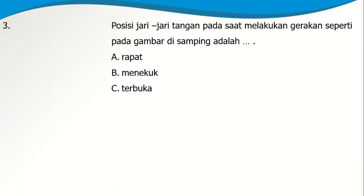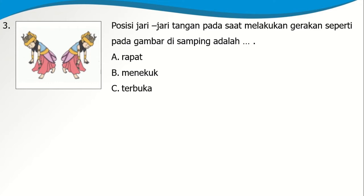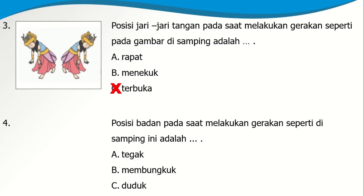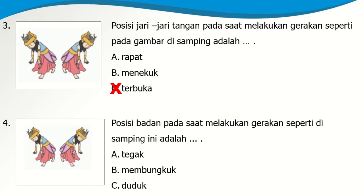Soal nomor 3: Posisi jari-jari tangan pada saat melakukan gerakan seperti gambar di samping adalah A. Rapat, B. Menekuk, atau C. Terbuka. Ya, posisi jari tangan kita adalah terbuka. Soal nomor 4: Posisi badan saat melakukan gerakan seperti di samping adalah A. Tegak, B. Membungkuk, atau C. Duduk. Ya, posisi kita adalah membungkuk.